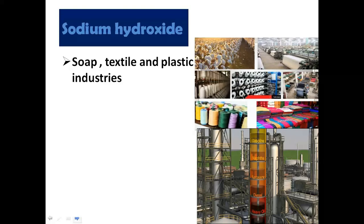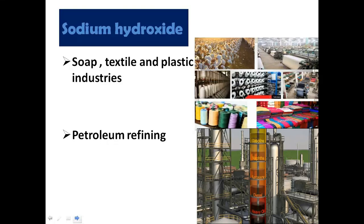جیسے کہ آپ figure میں بھی دیکھ رہے ہیں کہ sodium hydroxide کس طرح plastic اور textile industry میں use ہو رہا ہے۔ Next ہمارے پاس ہے petroleum refining — petrol کی refining میں ہم sodium hydroxide کو استعمال کرتے ہیں۔ Petrol crude form میں ہوتا ہے اور اس کو pure form میں convert کرنے کے لیے sodium hydroxide require ہوتا ہے۔ So sodium hydroxide is also used in petroleum refining.